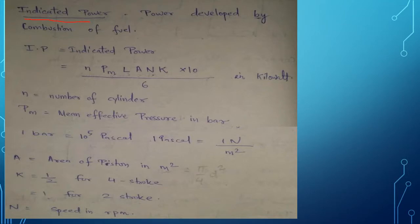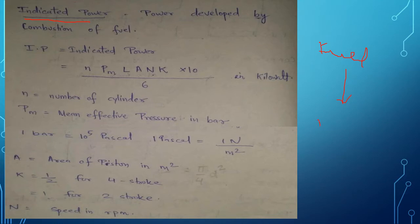Indicated power is simply the power developed by the combustion of fuel in an engine. We supply fuel, the fuel is burned, and it gives some power — that power is known as indicated power. Indicated power can be calculated by the formula: n × pm × l × a × n × k × 10⁻⁶, in the unit kilowatt.